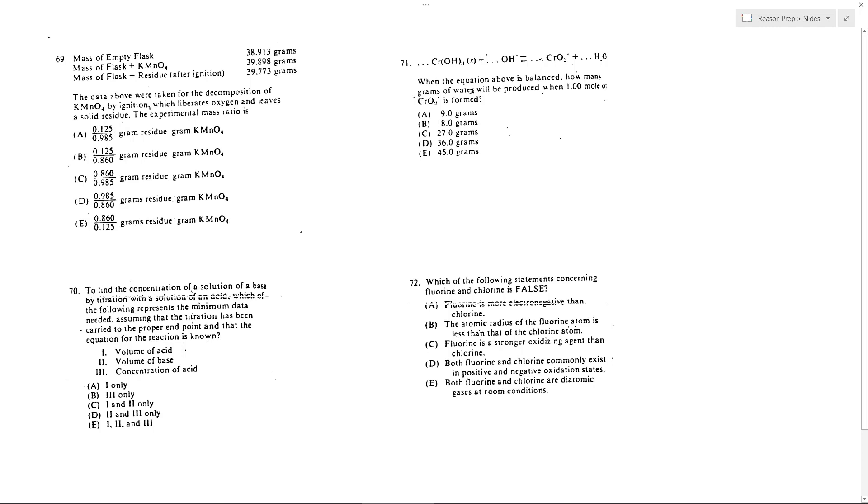So this is not something I think you'll see on the more recent tests, experimental mass ratio, but for the purposes of this question, I think if you look at the choices, you might get an idea of what to do. We want to know basically what is the ratio of the leftover residue to the original amount of stuff that there was. And so to do this, let's go ahead and actually find what is the mass of the KMnO4 and then the mass of the residue. And then basically we're going to put one over the other and then we're good to go.